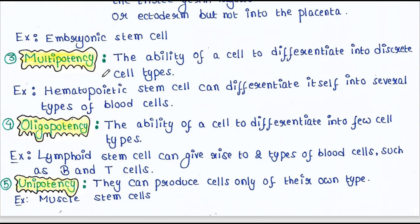Next is oligopotency. The ability of a cell to differentiate into few cell types is called oligopotency. Lymphoid stem cells have oligopotency — they can give rise to two types of blood cells: B cells and T cells.